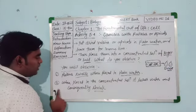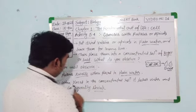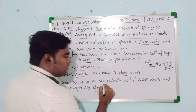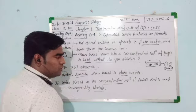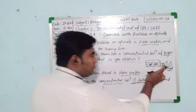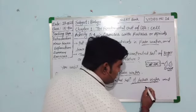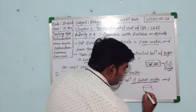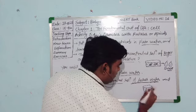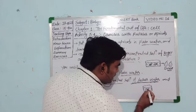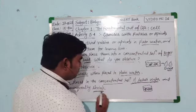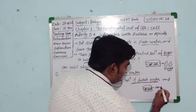Now, the second observation: when we place the swollen raisins into a concentrated solution of salt or sugar, they lose water and consequently shrink. Suppose this is a Petri dish having a concentrated solution of salt or sugar — the raisins will again shrink back to their shrunken form.